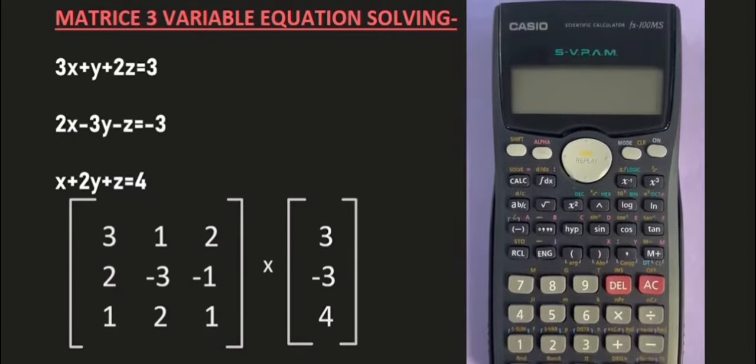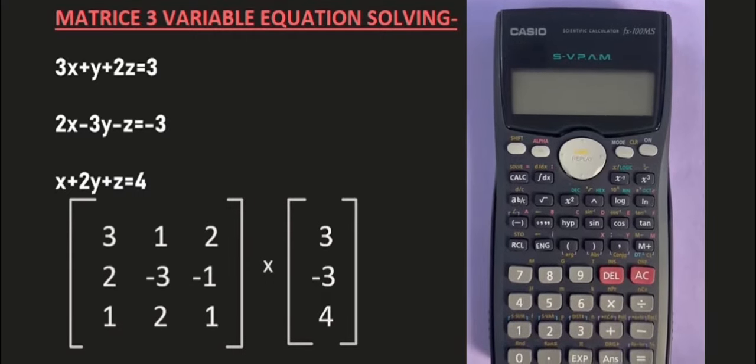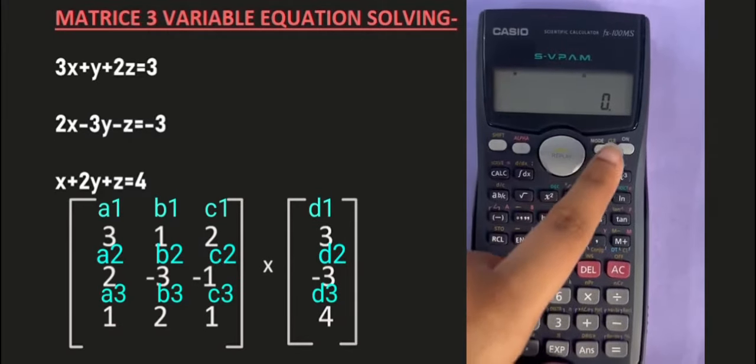So now we have three given equations which we form in the matrix. Name these constants into A1, B1, C1, D1 and so on.